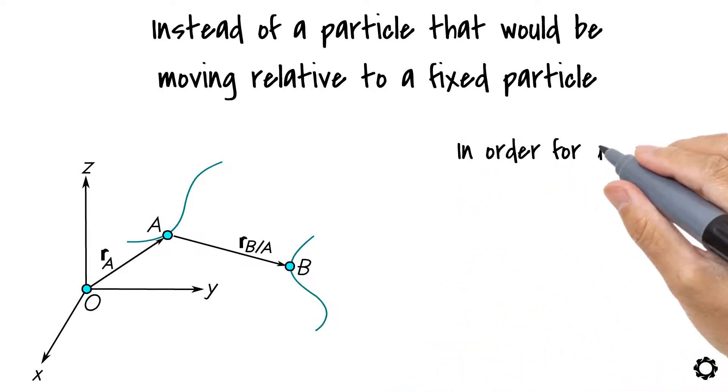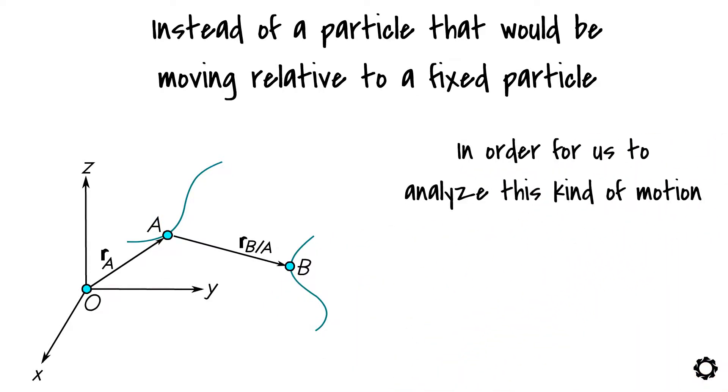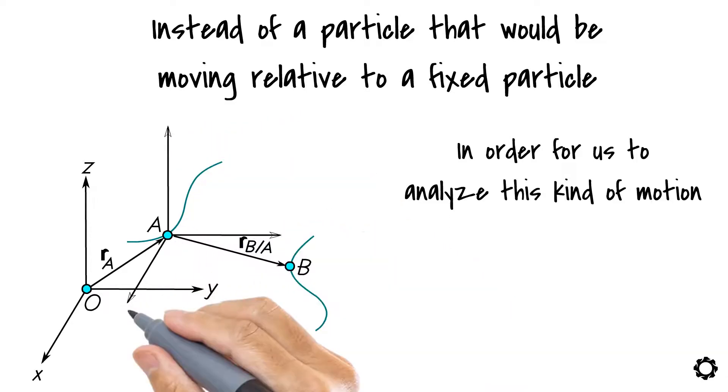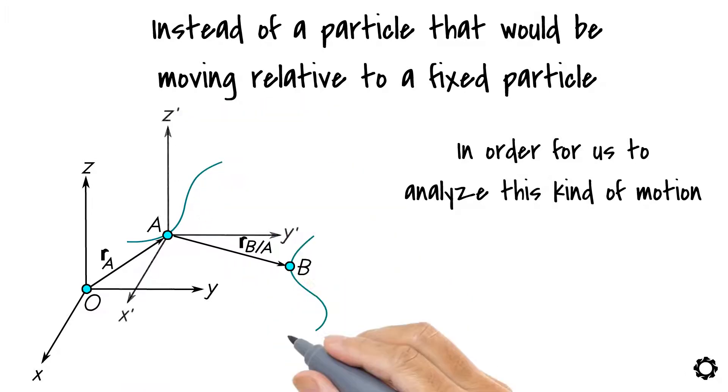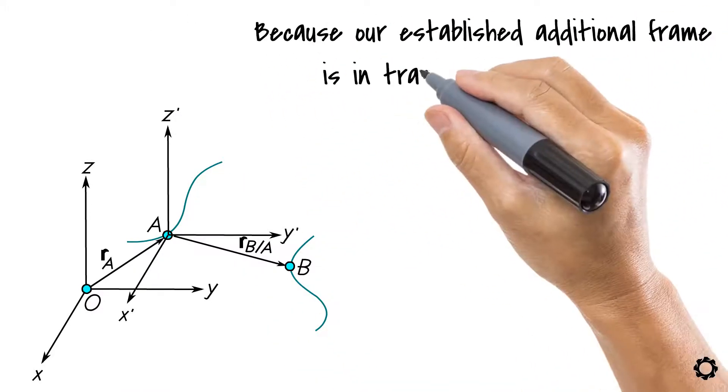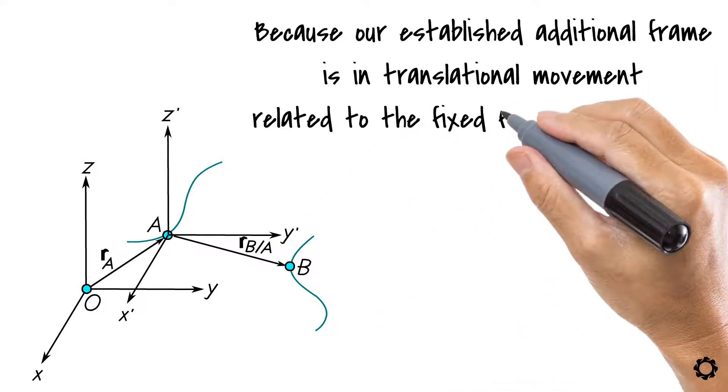Thus, in order for us to analyze this kind of motion, we are most often compelled to use more than one frame of reference, named as XYZ frame. As you see, because our established additional frame is in translational movement related to the fixed frame of reference,